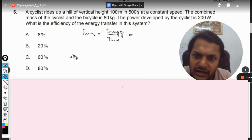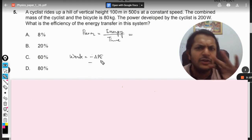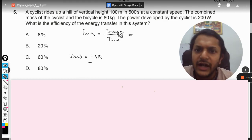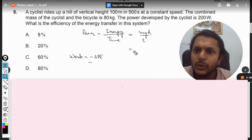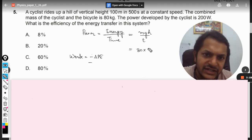Work done, because work energy theorem says work done is equal to negative change in potential energy, but the negative sign we will not consider. We just put energy here, so it will be mgh divided by time t.